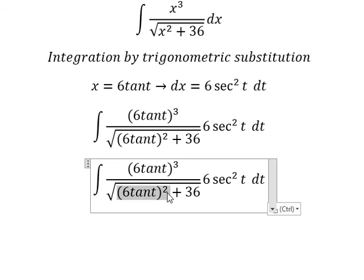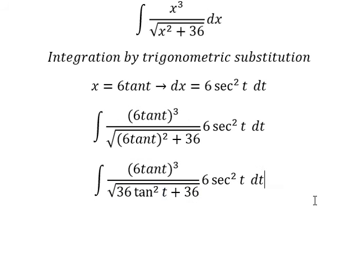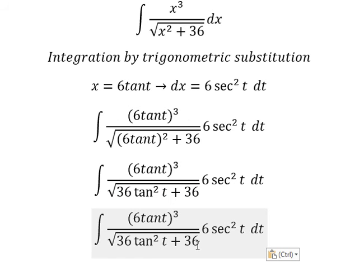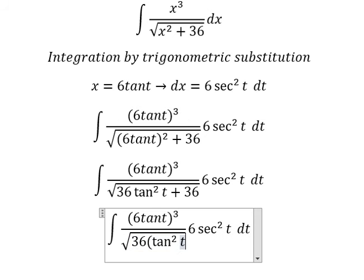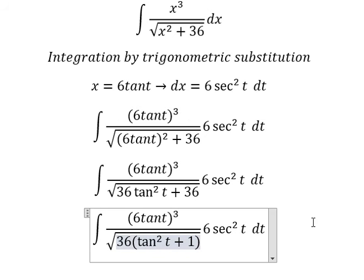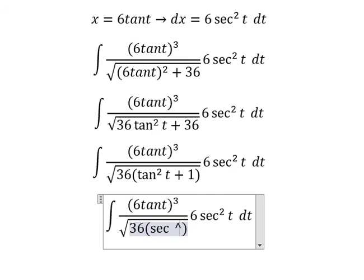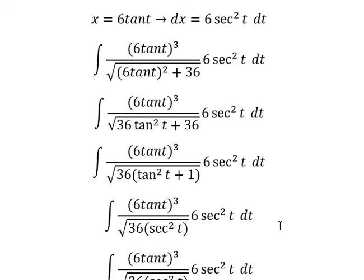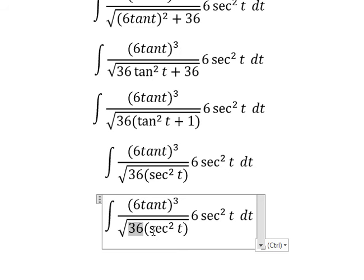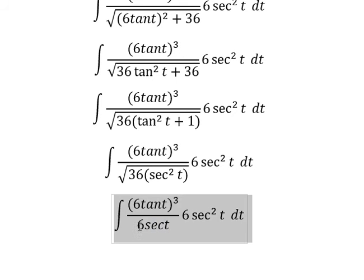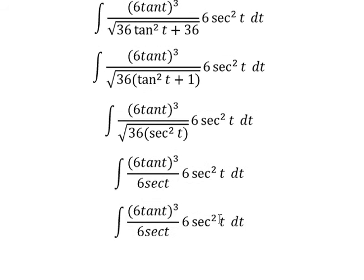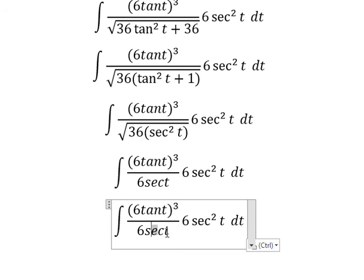So we have 36 times t squared. We apply factorization: 10t squared plus 1 is replaced by secant of t squared. The square root of 36 secant of t squared gives us 6 secant of t. We then simplify the 6 secant of t on the numerator and denominator.